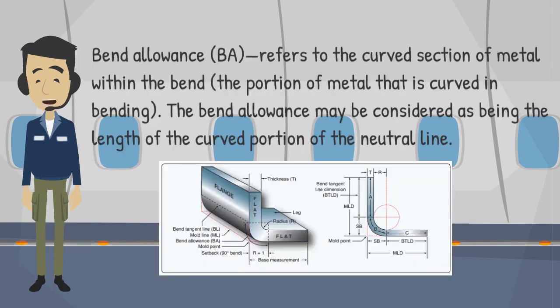Bend allowance (BA): refers to the curved section of metal within the bend — the portion of metal that is curved in bending. The bend allowance may be considered as being the length of the curved portion of the neutral line.